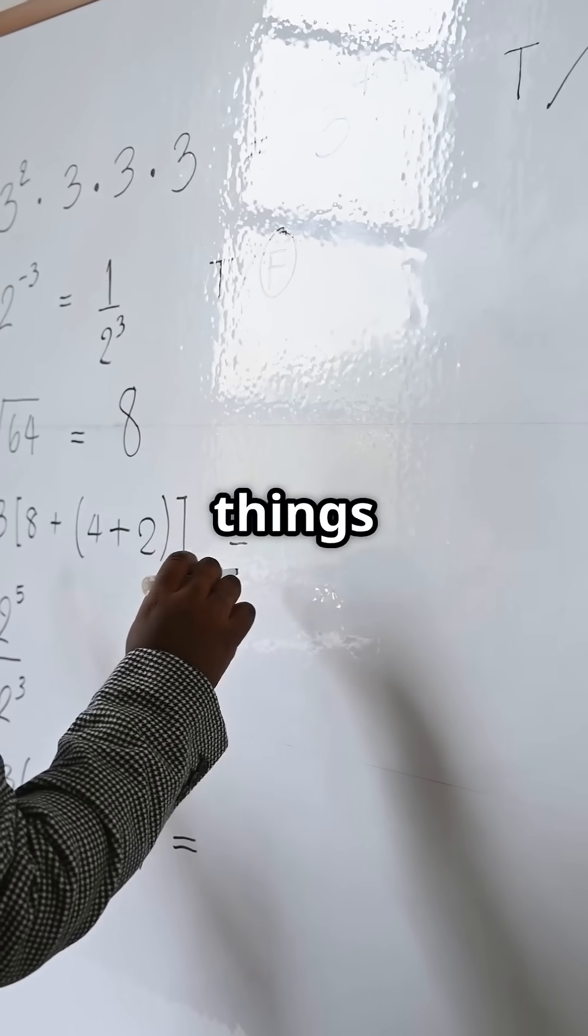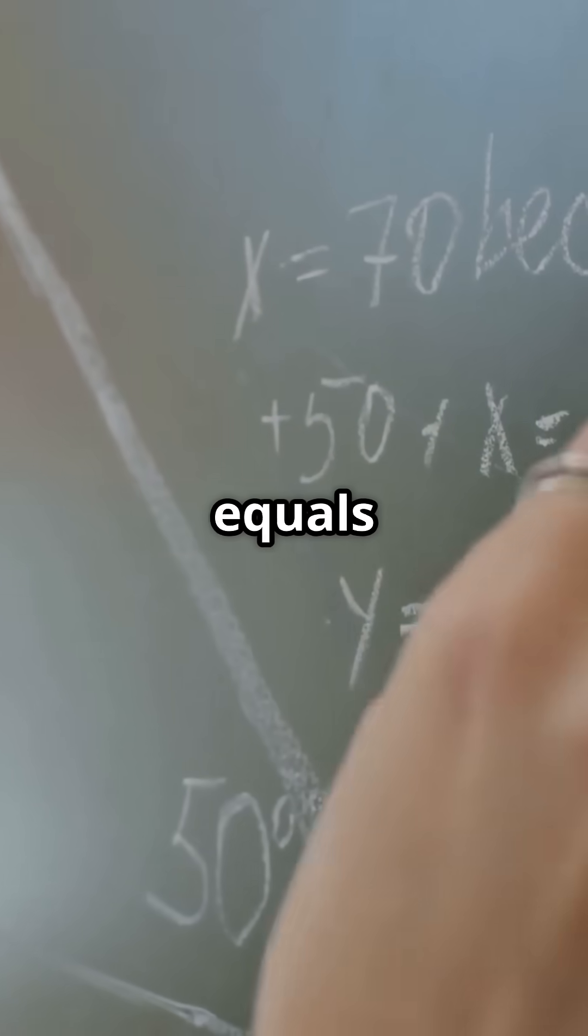Next, divide everything by a to keep things simple. x squared plus b over a times x equals negative c over a.